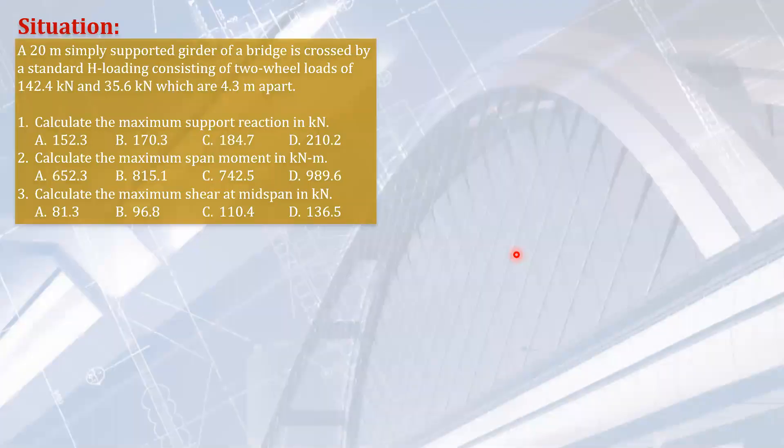This is the problem. A 20 meter simply supported girder bridge is crossed by a standard H loading consisting of two wheel loads of 142.4 and 35.6 kilonewtons which are 4.3 meters apart. The questions are the maximum support reaction, the maximum span moment, and the maximum shear at the mid-span, the beam mid-span.